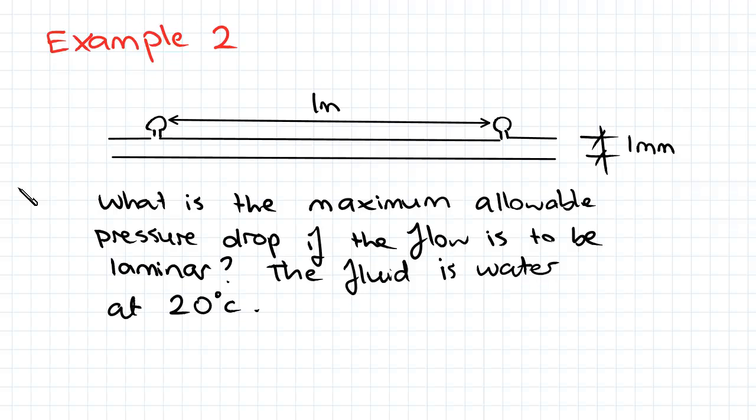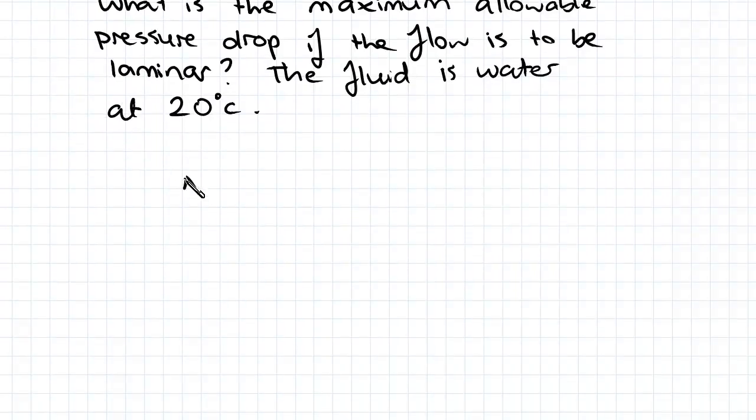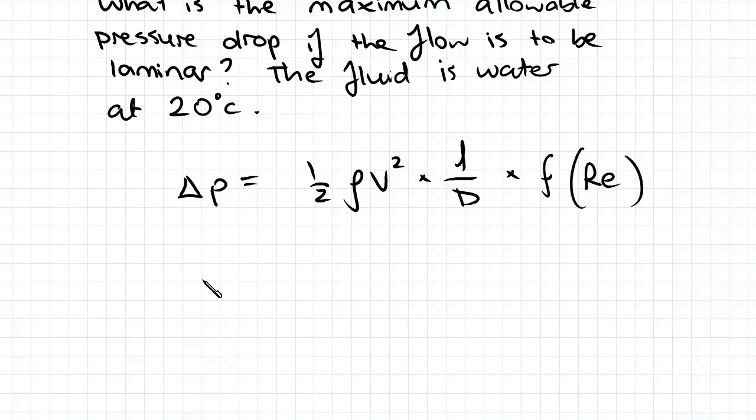So straight away we know we're using the Darcy friction factor for laminar flow. Let's write out that equation: delta P equals half rho V squared times L on D times F Re, where F Re equals 64 on Re, which is the Darcy friction factor for laminar flows.